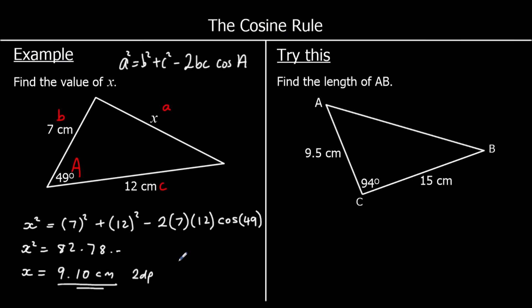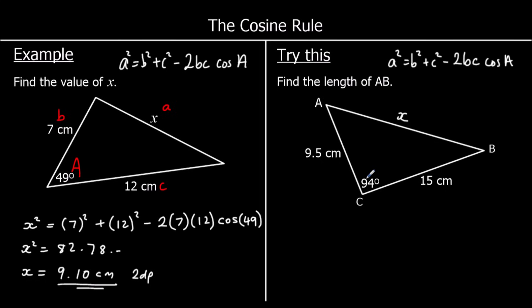A question for you to try — pause the video and give it a go. We've got two lengths and the angle in between them, so we are finding the other length using the cosine rule: a squared equals b squared plus c squared minus 2bc cos A. The angle is big A, opposite little a, and the other two sides are b and c — it doesn't matter which way round.